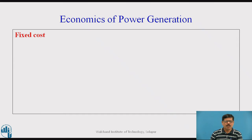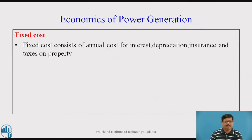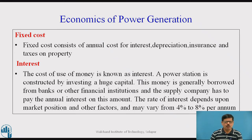Next is the fixed cost. When the plant starts commissioning, it always consists of the fixed cost. The fixed cost consists of annual cost of interest, depreciation, insurance and taxes on the property. Interest is the cost of use of money — whenever we borrow money, we require to pay a cost for that borrowed money. A power station is constructed by investing a huge capital amount, which is generally borrowed from banks or other financial institutions, and the supply company has to pay the annual interest on this amount. The rate of interest depends upon the market position and other factors, and it may vary from 4% to 8% per annum.